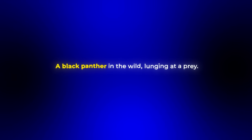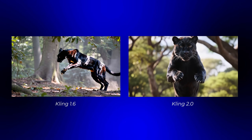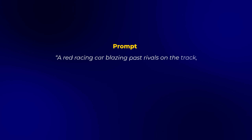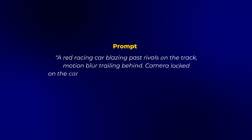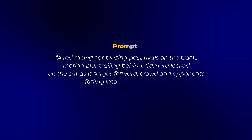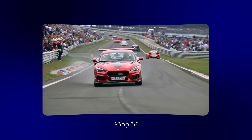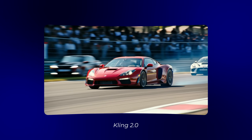I tested this by creating a video of a black panther in the wild lunging at prey — you can clearly see the difference between models 1.6 and 2.0. Here's another quick example that demonstrates the improved dynamics. I prompted both models to create a red racing car blazing past rivals on the track, with motion blur trailing behind, camera locked on the car as it surges forward, crowd and opponents fading into the background. With Kling 1.6 the movement was decent but somewhat stiff and the camera tracking wasn't perfect, but with Kling 2.0 it is absolutely amazing.